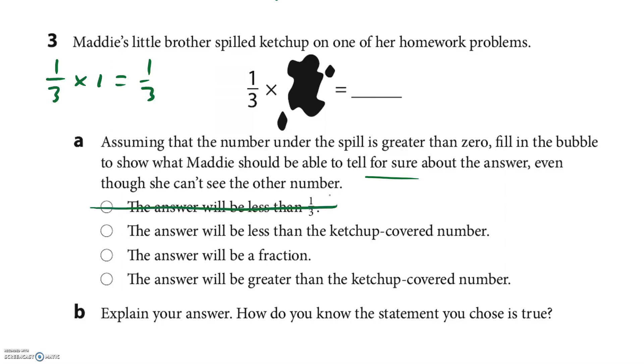The answer will be less than the ketchup covered number. So far that works, right? Cause 1/3 is, this would be the ketchup, that's the ketchup. So maybe this one, the answer will be a fraction. Yup, so far it's a fraction, right? The answer will be greater than the ketchup covered number. Hmm, it's already not that. So let's try another number. Let's try a fraction, let's try 1/3.